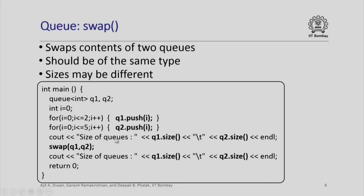We just print sizes by the way for our information. The sizes of queues are this. Now, when we say swap q1, q2, the two queues will be swapped.